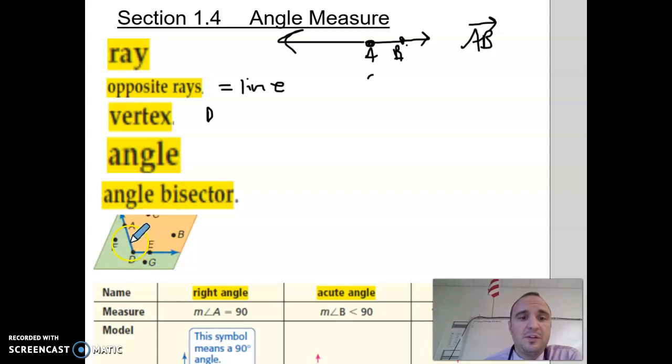What is an angle? This is an angle right here. That's an angle. And when you write the angle, you always write it in order. So A, D, E.